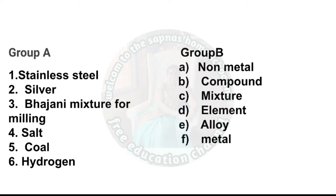Group A includes: stainless steel, silver, salt, coal, hydrogen. Group B includes: non-metal, compound, mixture, element, alloy, and metal. The lesson covers how to identify elements, mixtures, and compounds.